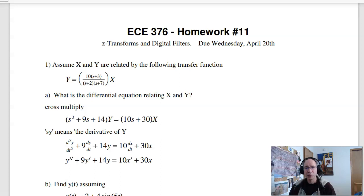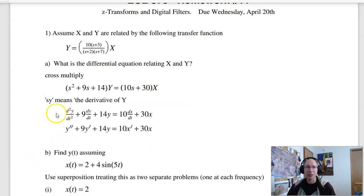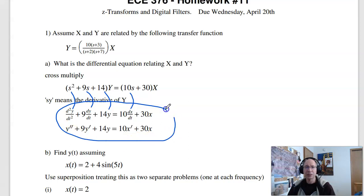The first problem just looks at what the filter at the S-plane looks like. So if I have a filter in the S-plane, what that means is a differential equation. Cross multiply and then convert. S squared y means the second derivative of y, Sy means the first derivative and y is just y. Sx is the derivative of x, so that's the differential equation relating x and y.